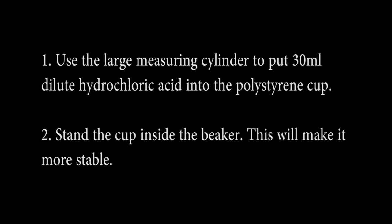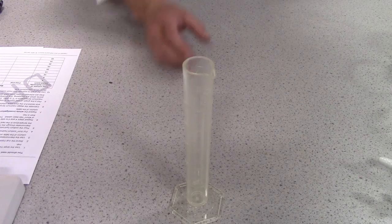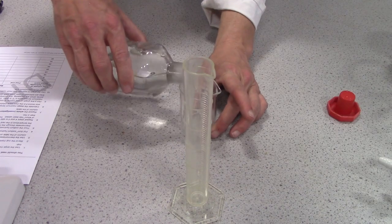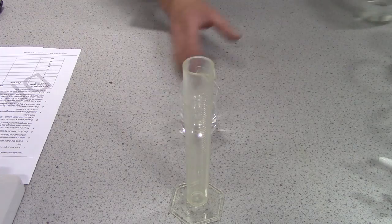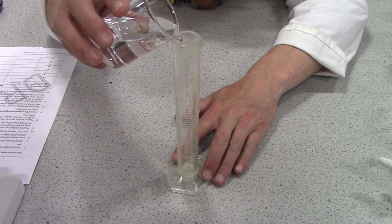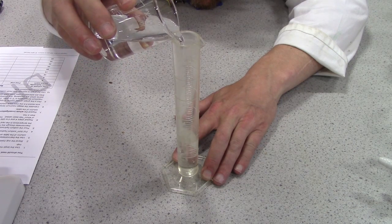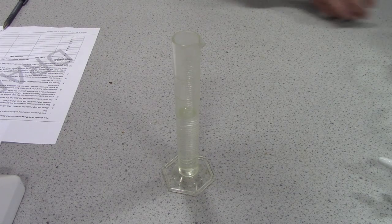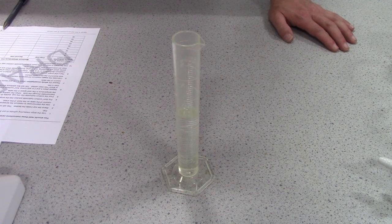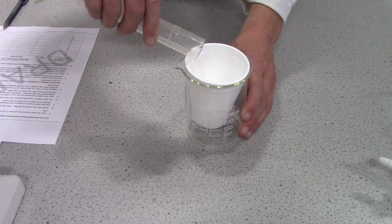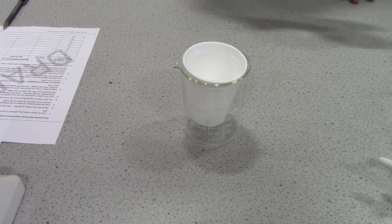Step one: use the large measuring cylinder to put 30 centimetres cubed of dilute hydrochloric acid into the polystyrene cup. So that's 30 ml of dilute acid. Crouch down until the graduations line up either side. Pour that into the polystyrene cup and stand the cup inside the beaker. Put that back next to my acid.